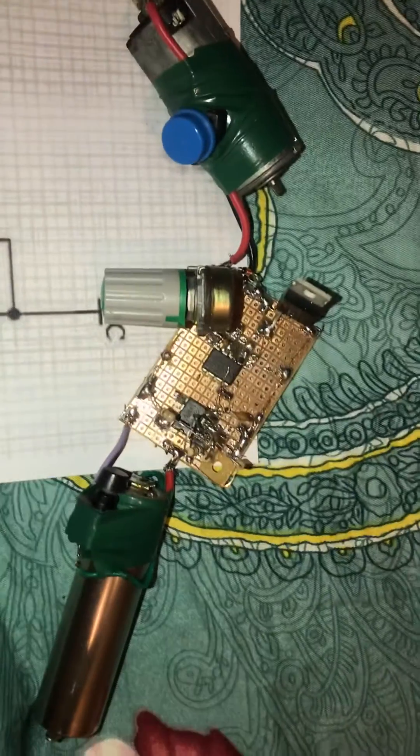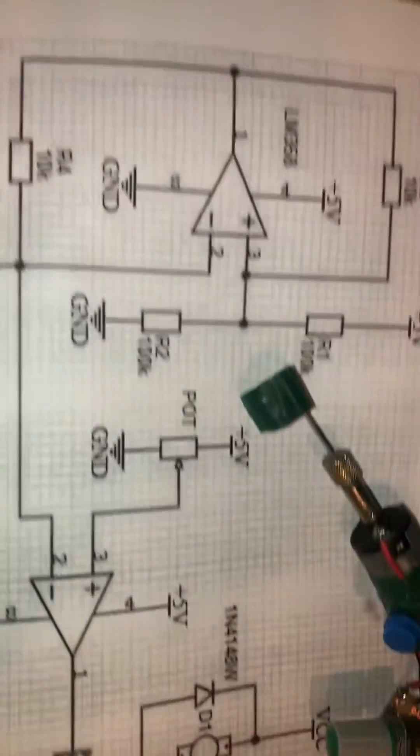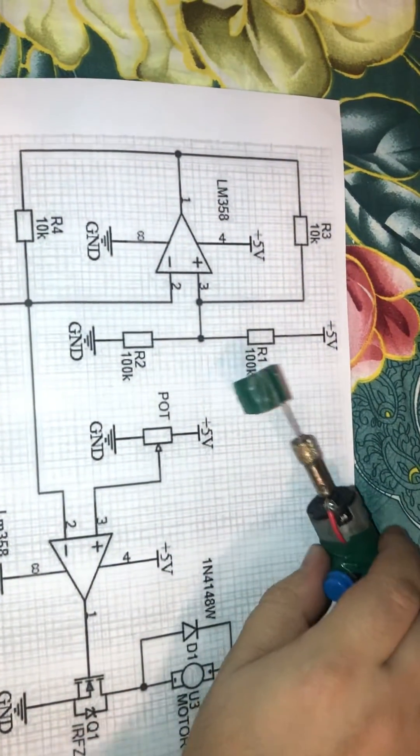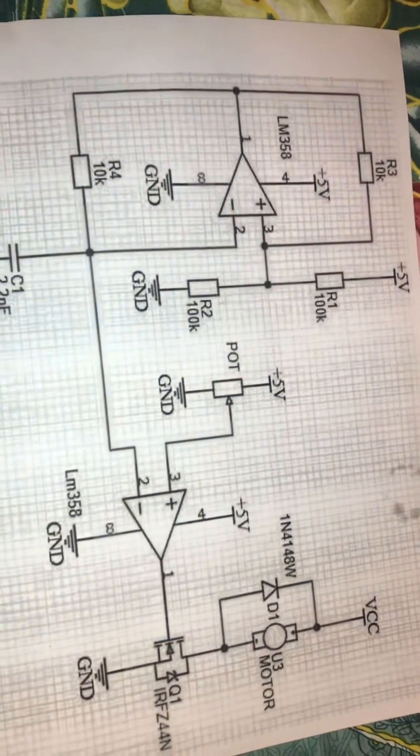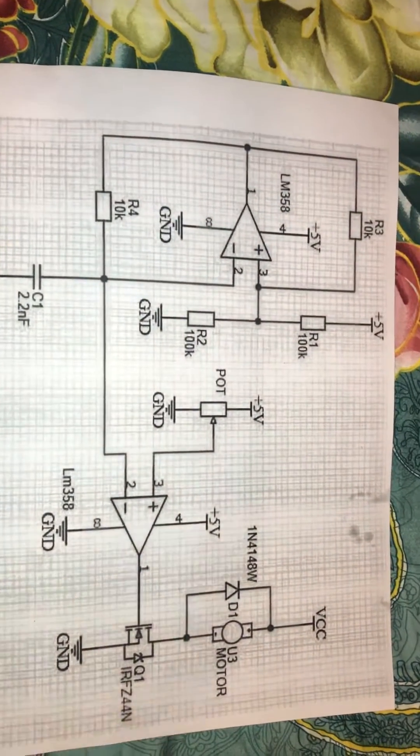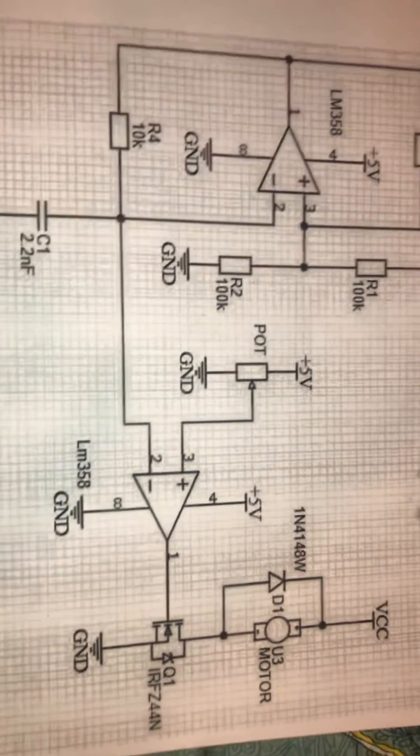...a motor speed control with 3.7 volt battery to drive the motor. I used two LM358 dual channel operational amplifiers.